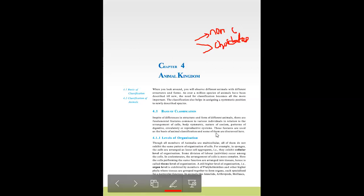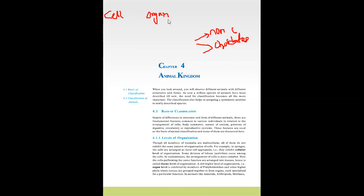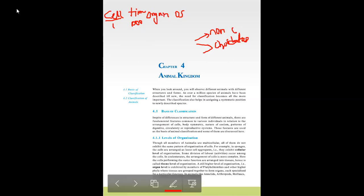Now coming to levels of organization. There are cellular level, tissue level, organ level, and organ system level. One cell doing everything is called cellular organization. Group of cells together form tissue — here there is division of labor. In organ system, like us — we are mammals — there is an excretory system for excretion, nervous system, endocrine system, circulatory system, and respiratory system, each doing a particular function.